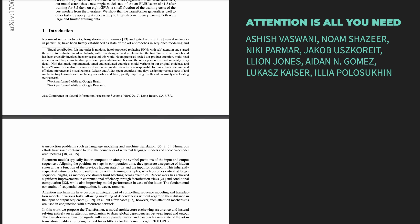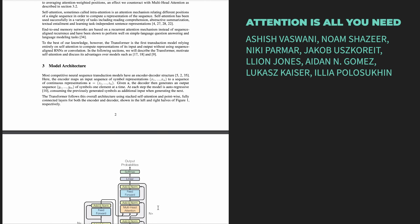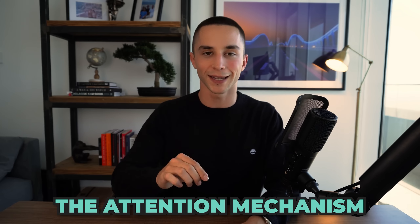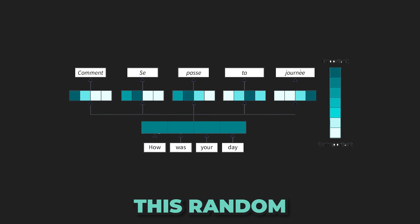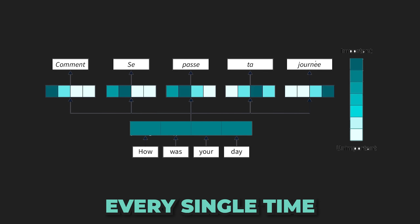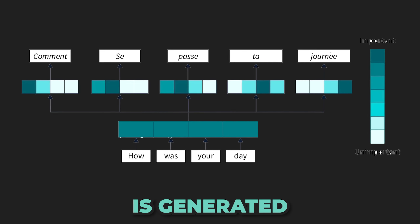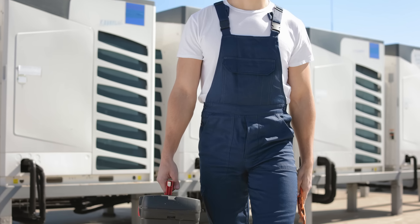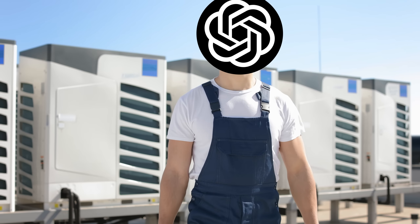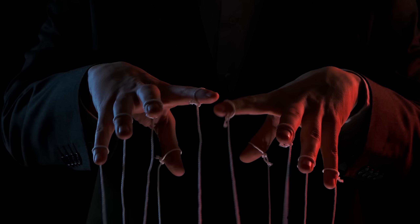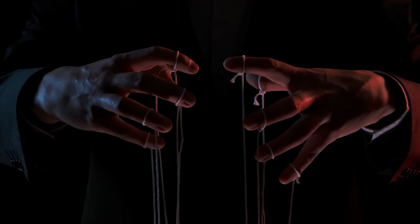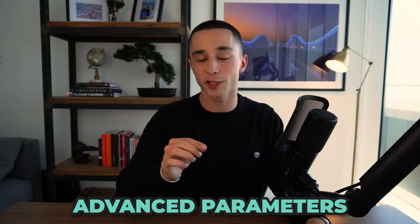One of the defining points of this transformer architecture that these models are built on top of is what's called the attention mechanism. It is crucial to understand that this random sampling process is occurring every single time a new token is generated. This is because OpenAI has given prompt engineers a toolkit of tools we can use to essentially manipulate how this random sampling process occurs. These tools are called advanced parameters and we're going to be covering them later in the video.